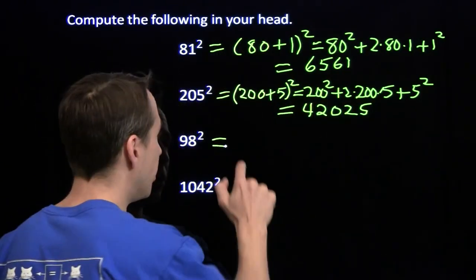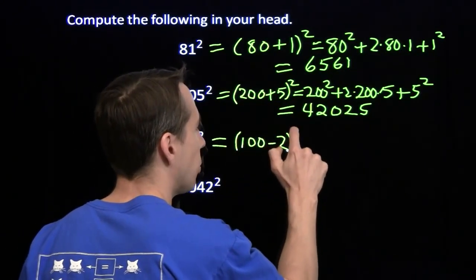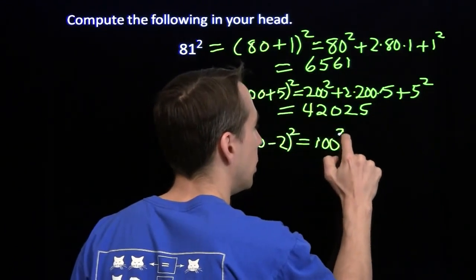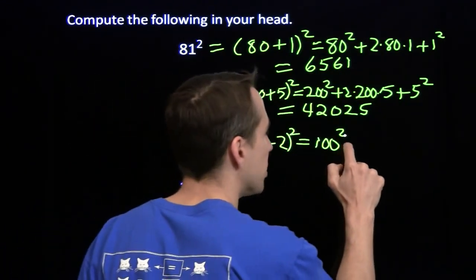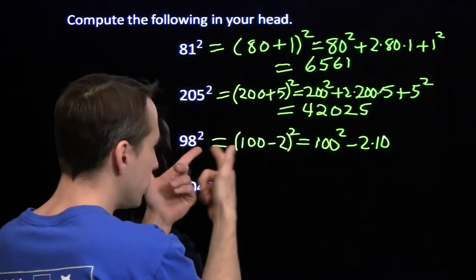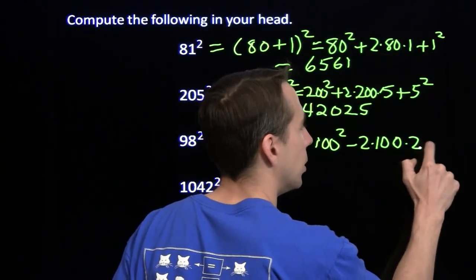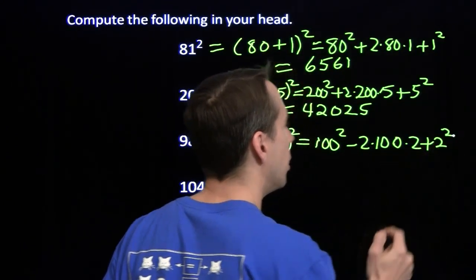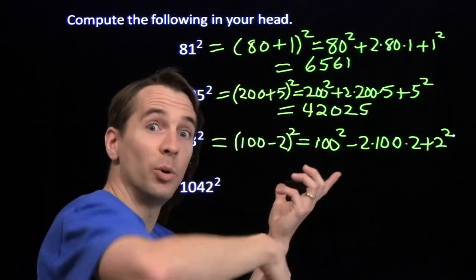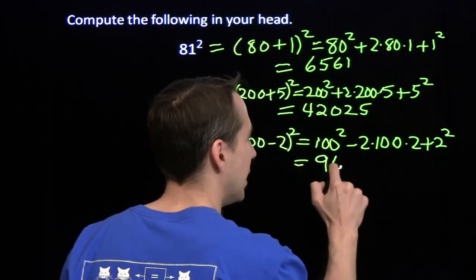98 is near 100, so we write it as 100 minus 2 squared. That gives 100 squared, and you've got to be careful with signs — the minus means we're subtracting in the middle term: minus 2 times 100 times 2, plus 2 squared at the end. 100 squared is 10,000. 2 times 2 is 4, so we're subtracting 400, going down to 9,600. Then adding that 2 squared gives 9,604.